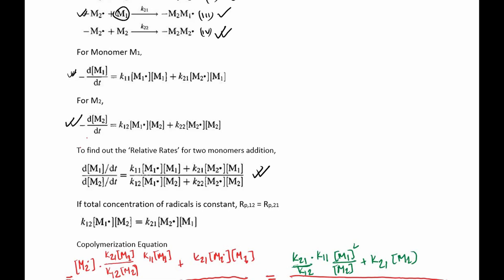Now we are going to assume the steady state condition. In that case, we have to consider that the total concentration of the radicals is constant, which gives us this particular equation. The terminal polymer radicals M2 and M1 are adding the monomers M1 and M2 — doing a crossover — and this crossover is equal under steady state conditions. That gives us: the rate of polymerization of 1,2 is equal to the rate of polymerization of 2,1, meaning the rate of polymerization of the crossover monomers are equal.